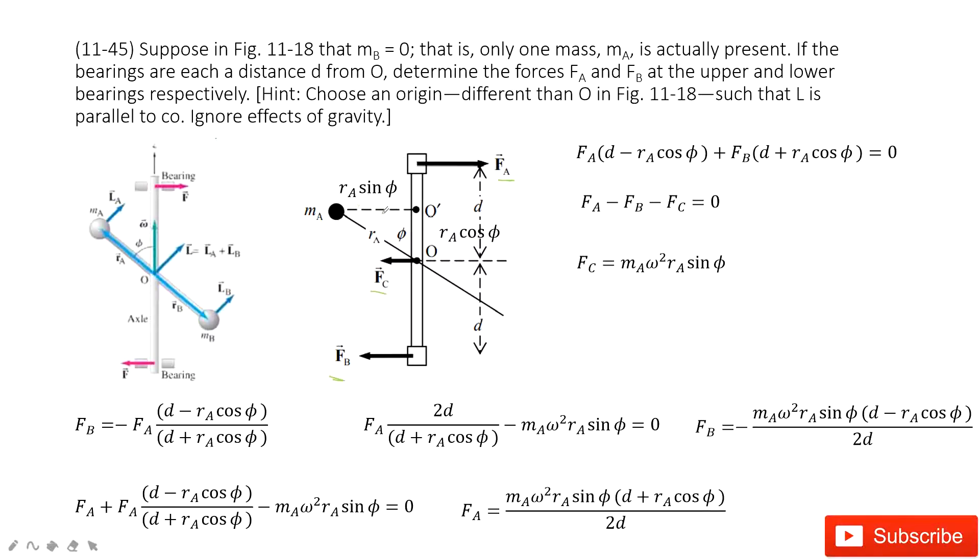So for C, the centripetal force for C is mA ω² R. This is the radius for object A, so this is rA sin φ, the circular motion's radius, and ω², the angular velocity squared. This is the centripetal force.